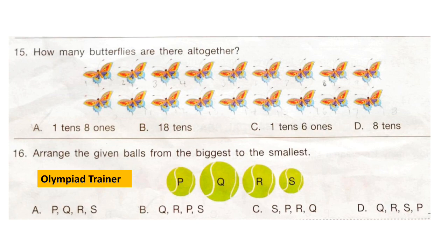Question 16: Arrange the given balls from biggest to smallest. Q is the biggest, then comes R, then P, and the smallest is S. So the order is Q, R, P, S. That is option B, and B is the correct answer.